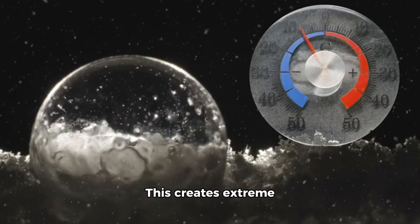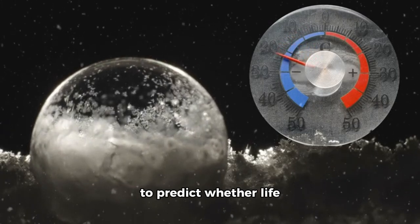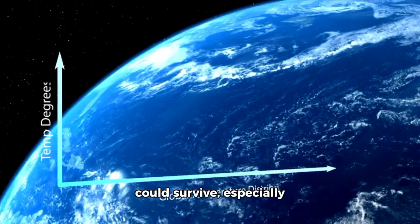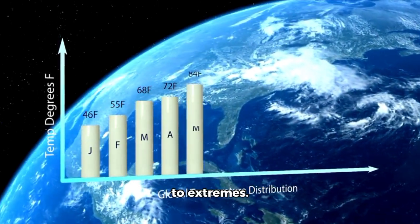This creates extreme temperature differences that make it even harder to predict whether life could survive, especially on the dark side where temperatures might plunge to extremes.